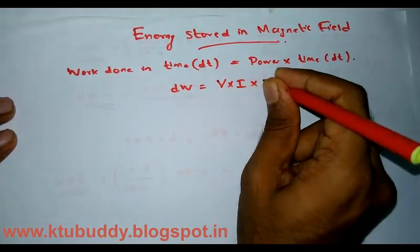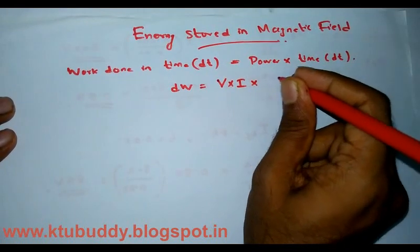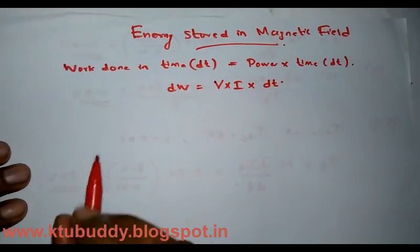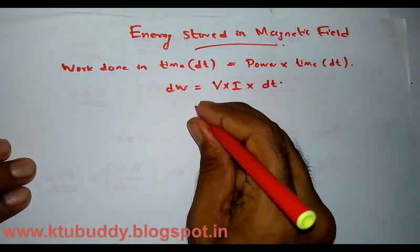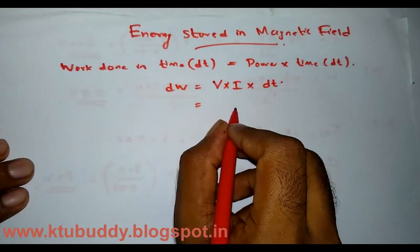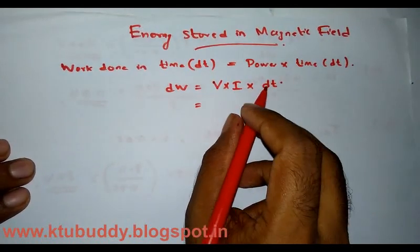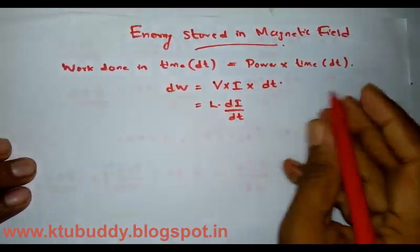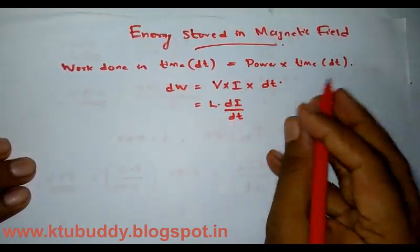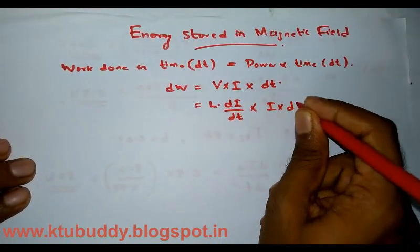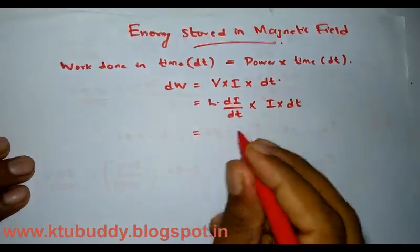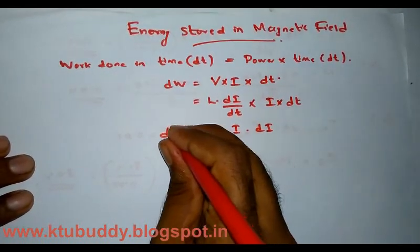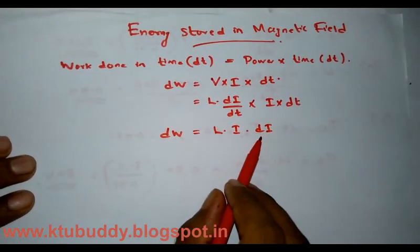We have dW equal to power into time, which gives us the expression for electrical power as v into i into dt. By understanding the concepts of self-inductance, the EMF induced as a result of self-inductance of a coil is given by L·di/dt. So voltage is substituted as L·di/dt, giving us L·i·di as the expression for work done during a small time dt.